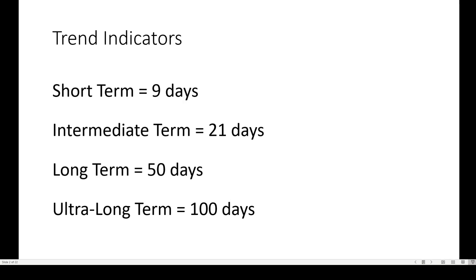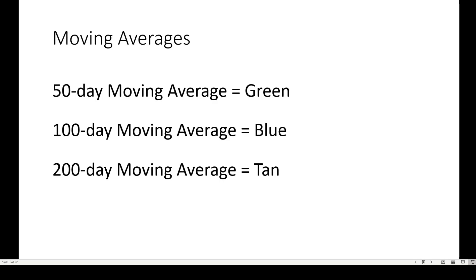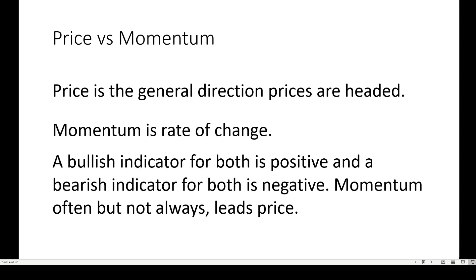Let's look at the trend indicators you'll see in the momentum and price screen. Short-term is 90, intermediate 21, long-term 50, ultra-long-term 100. Moving averages — the lines on my trade screen — 50-day in green, 100-day in blue, 200-day in tan. Price is the general direction prices are headed. Momentum is the rate of change, and a bullish indicator for both is positive and a bearish indicator for both is negative. Momentum often, but not always, leads price.